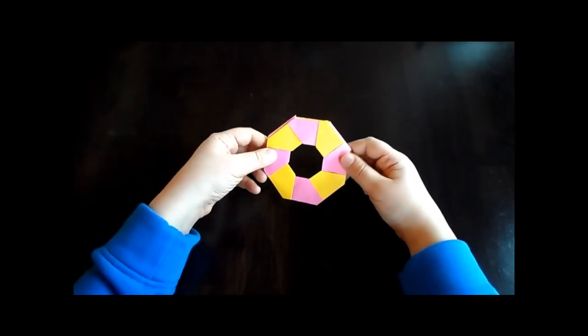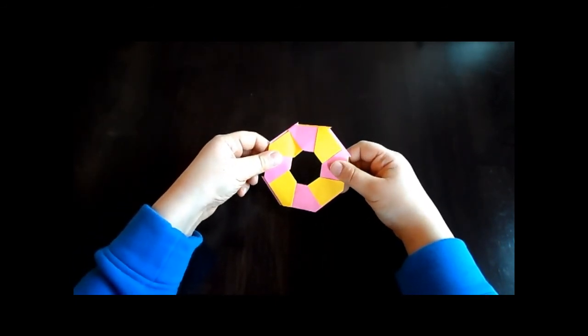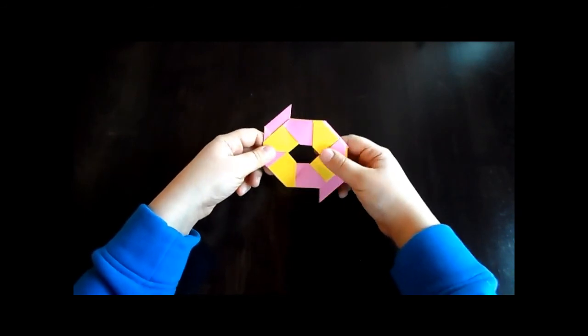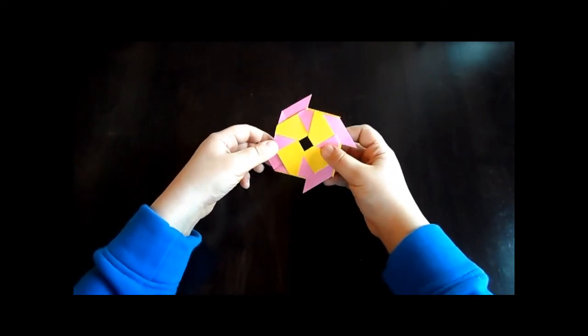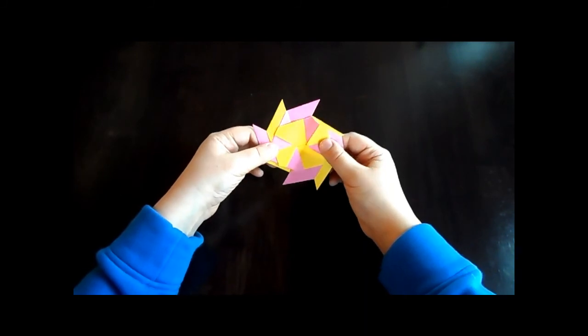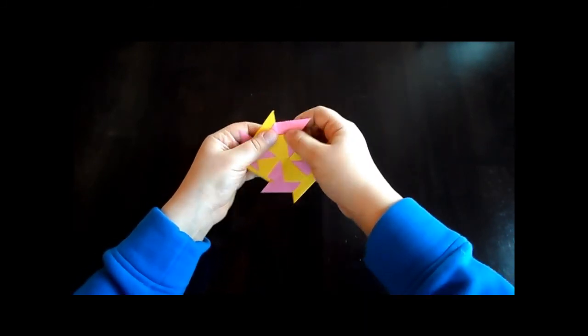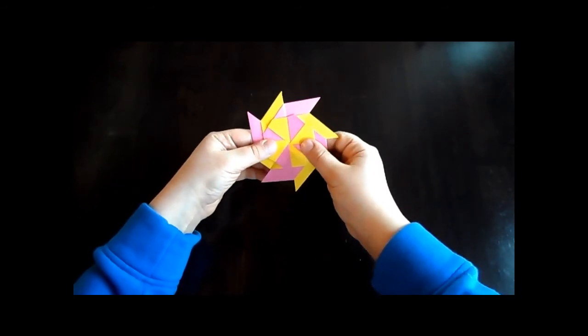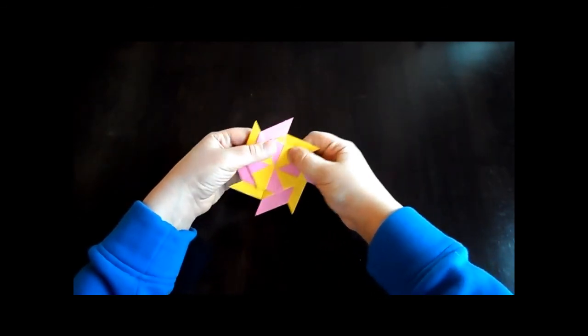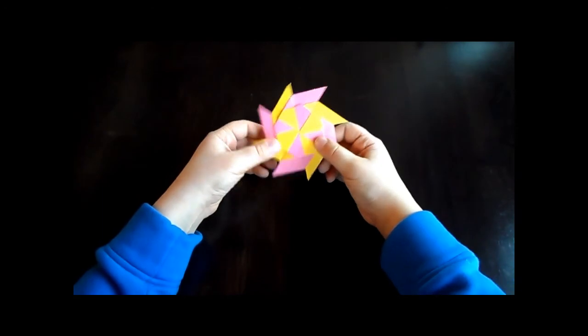So you're probably thinking to yourself, well this looks nothing like a ninja star. Well, now I'm going to teach you how to transform it. You're going to push these together, push the opposites together, push these together. And then now it's locking up. This is what happened in my first time, my failed recording.